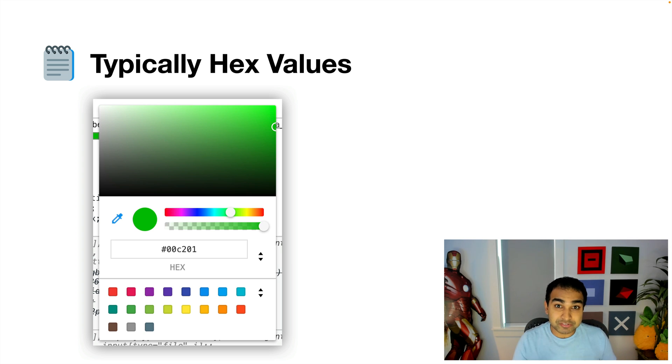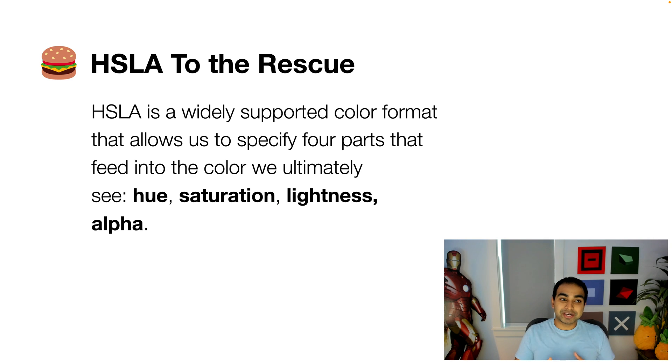What if we had a more human-friendly way of representing colors? And that's where a format called HSLA comes into the picture. It's a widely-supported color format that allows us to specify the four parts that feed into the color we ultimately see: hue, saturation, lightness, and alpha.